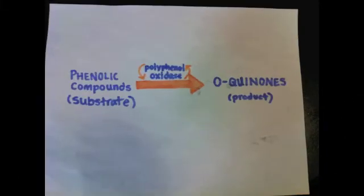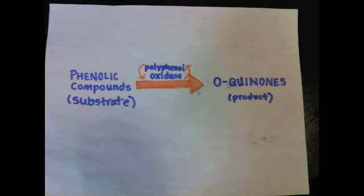When an apple is cut, oxygen is introduced into the injured plant tissue. The enzyme polyphenol oxidase, which is located in the chloroplasts of the apple, is absorbed by the phenylphenol compound, which is a substrate molecule, and produces o-quinones, which are responsible for the brown coloring in the apple.